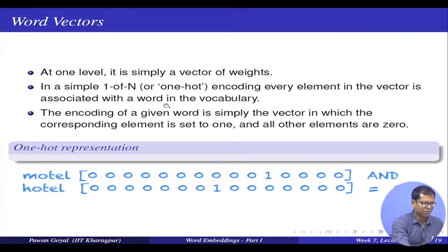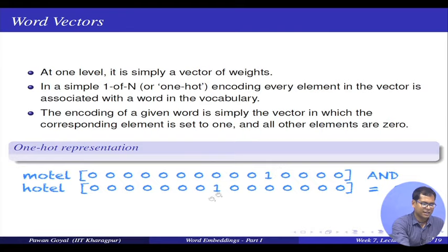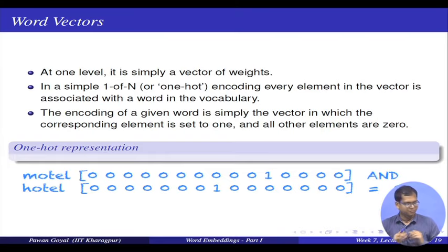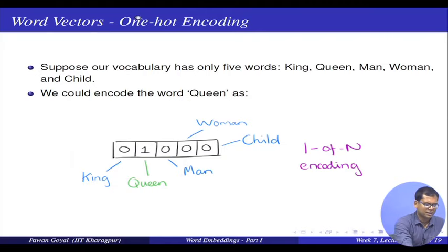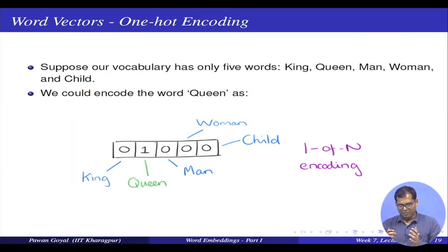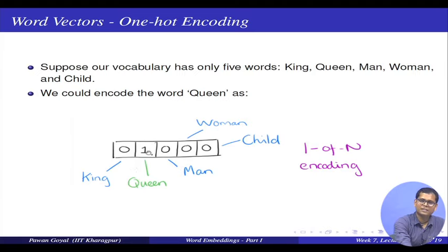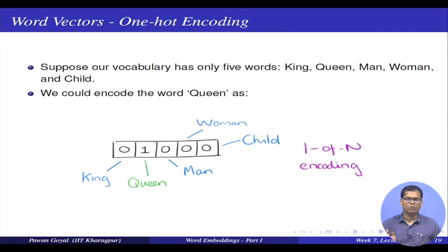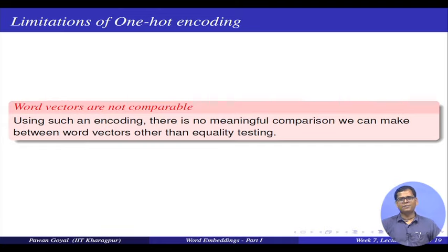If we are using one-hot encoding, I cannot compute the similarity among words. If I take motel and hotel, they will have 1 at different places and if I compute similarity — if I do an AND — it will be 0. So this is not conducive to semantic similarity between words. For example, with a vocabulary of five words: king, queen, man, woman, and child, I have vectors in five dimensions. I can encode queen with a weight of one in the second dimension, and I cannot compute how similar king and queen are or how similar queen and child are. We cannot make any meaningful comparison; we can only find if two words are the same.